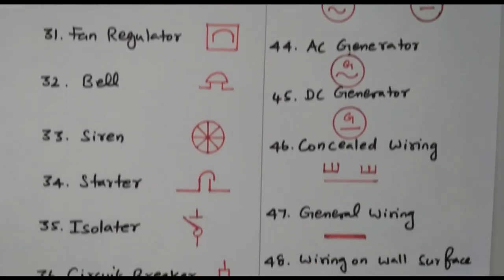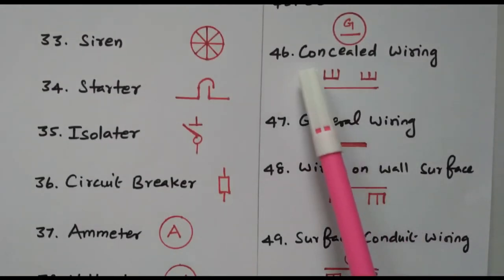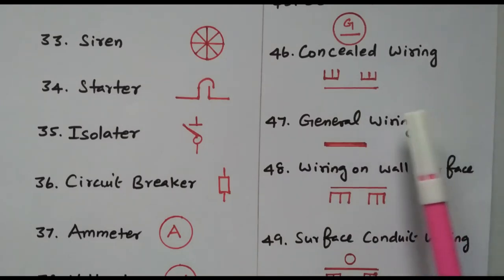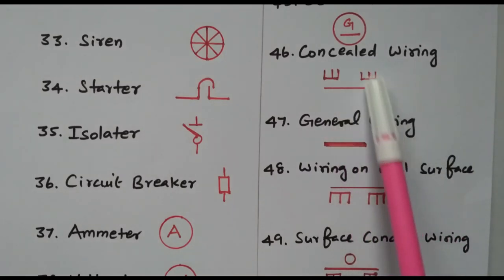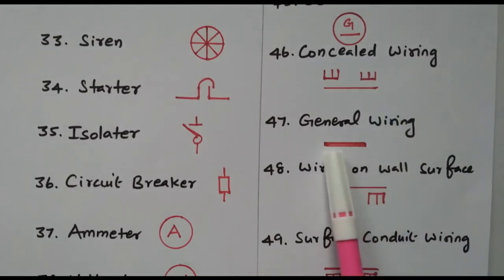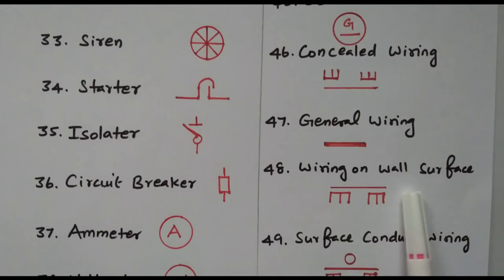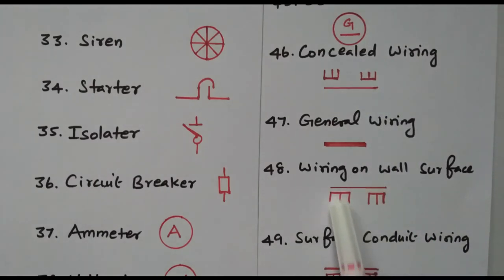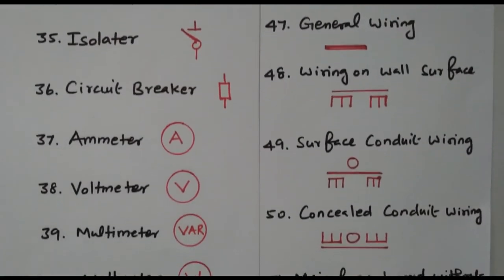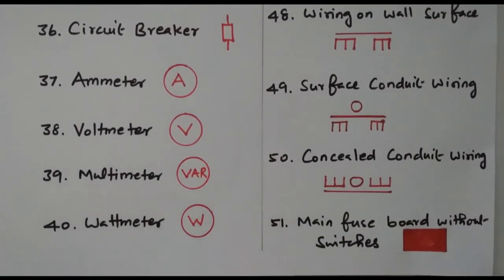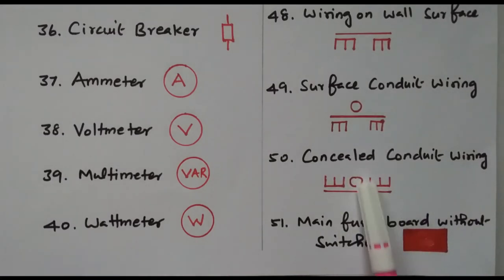Then we will go to the wiring types. Concealed wiring is shown by a line with terminals over it. General wiring is just one line. Wall surface wiring shows lines going upward and downward, representing wires going along the wall surface. Surface contact wiring has a circle added to the same diagram. Concealed contact wiring has the circle and wire going in the upward direction.